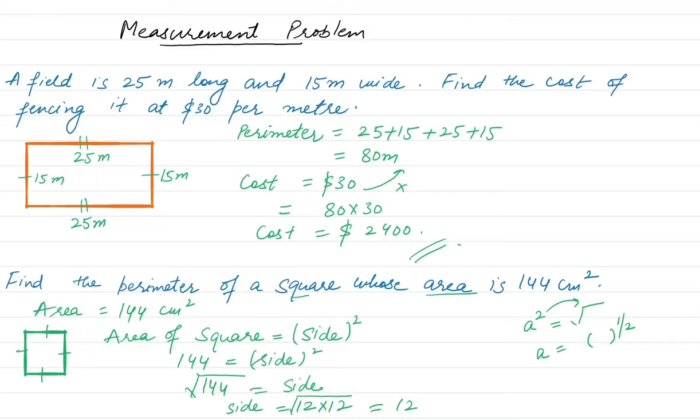We need to take 12 common because they both are under root or in the power of half. Suppose if a times a is under the root, that will become a. In this one we need to take the value common, so a is common in this one. That's it.